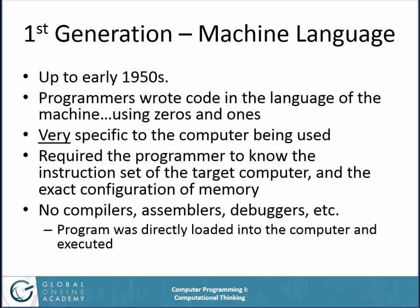The first generation is machine language. Up until the early 1950s, if you wanted to write code for a computer, you had to understand the hardware, the electronics, the CPU of that computer. You had to write your code in the language of the machine using zeros and ones. Sometimes you'd go to the hardware itself and instead of typing in a program, you would reattach the wires — like what they were doing in the 1940s in the movie Imitation Game. It was very specific to the computer being used and required the programmer to know the instruction set of the target computer and the exact configuration of memory.